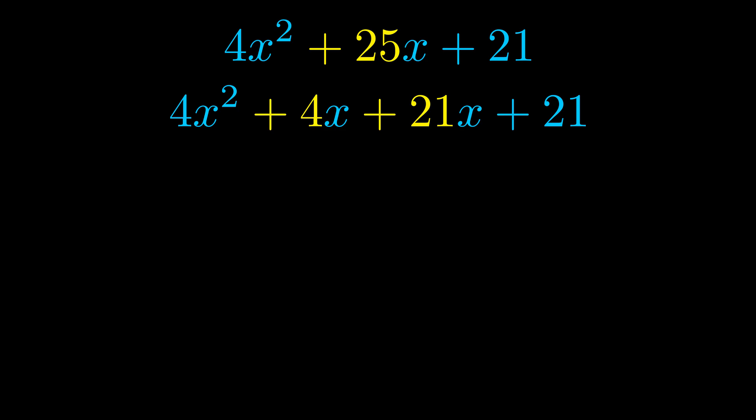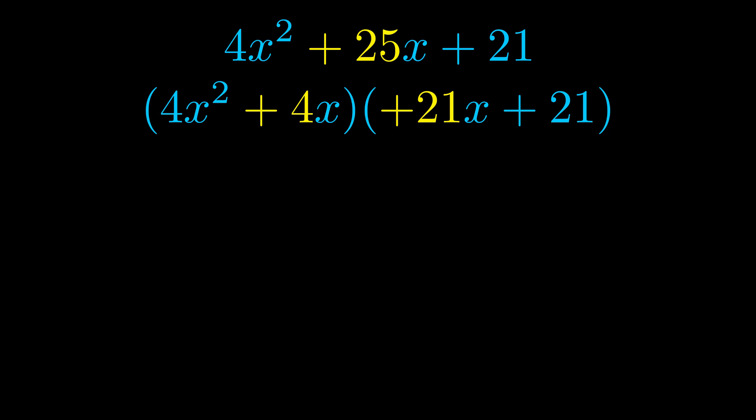Once we've done this, we put parentheses around the first term and the last term. We do that so we can take the greatest common factor out of both terms.